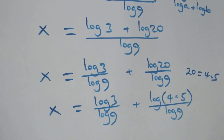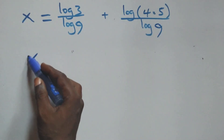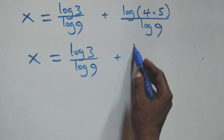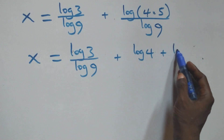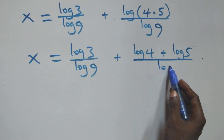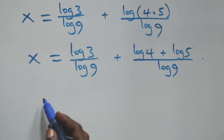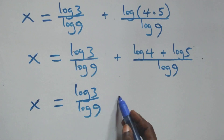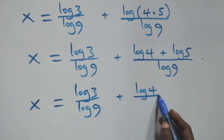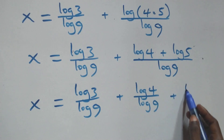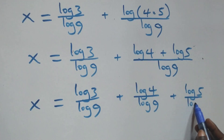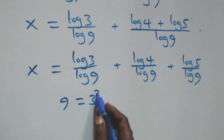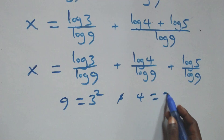This also follows the log product rule, so we have x equals log 3 over log 9 plus log 4 over log 9 plus log 5 over log 9. Now we can write 9 as 3 squared, and also 4 as 2 squared.